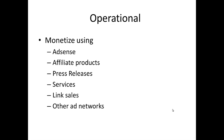In the operational arena, there are a number of ways to monetize a Google News site. Most people monetize using AdSense. It's the easiest way to monetize a Google News site, certainly not the only way and maybe not the best way as well. Other people use affiliate products. Some sell press releases. Others sell certain services. Some people sell links because there's a lot of traffic to a Google News site. And of course, there are many other ad networks. We're going to talk about the different monetization techniques in a future video, but this is the overview of how people make money operationally.